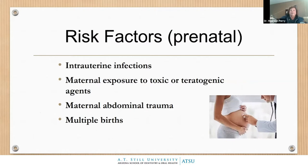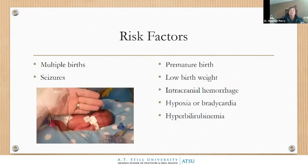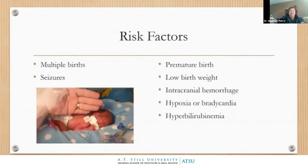Risk factors for CP include intrauterine infections, teratogens, abdominal trauma, and multiple births. Postnatally, we see premature birth and low birth weight as major factors. You can see in the photograph that some babies are only the size of a hand. Even a generation ago, those babies would not have survived, but now they are a risk factor for having CP.